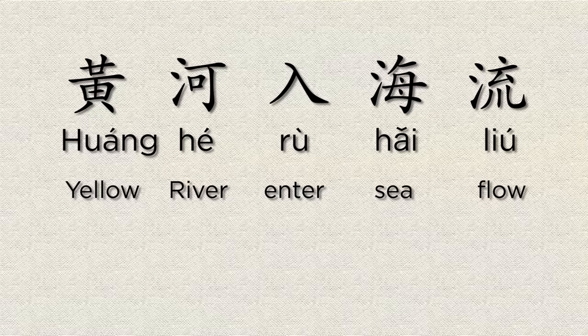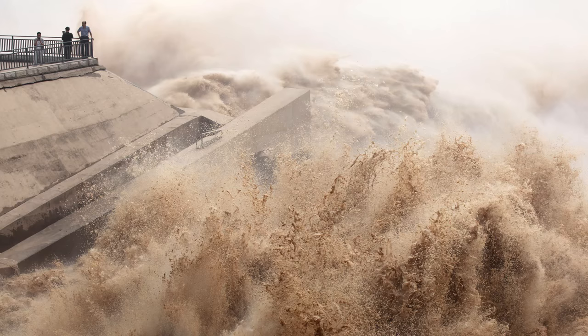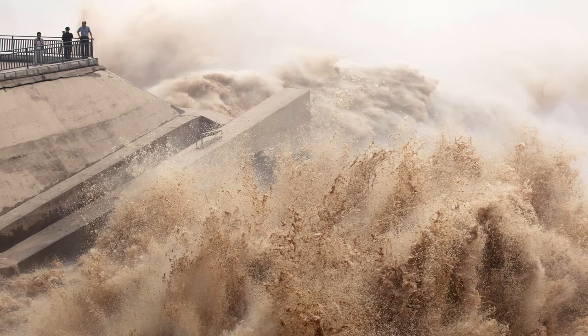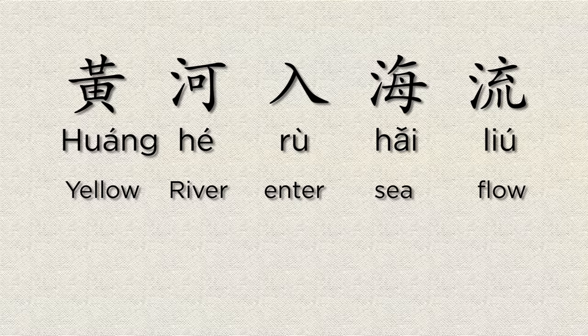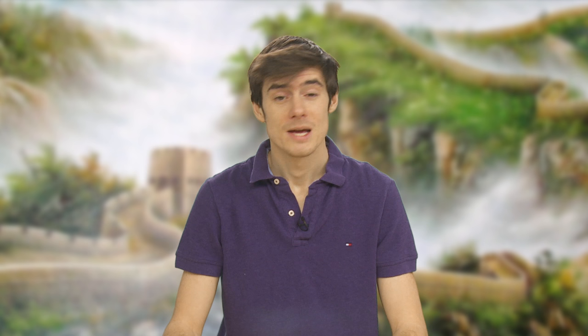黃河入海流. 黃河 means the Yellow River, one of the two major rivers in China, together with the Yangtze River. The Yellow River got its name because of the yellow sediment that gives it its colour. 入 means to enter, 海 is the sea, and 流 means to flow. So we can translate this as: the Yellow River flows into the sea.